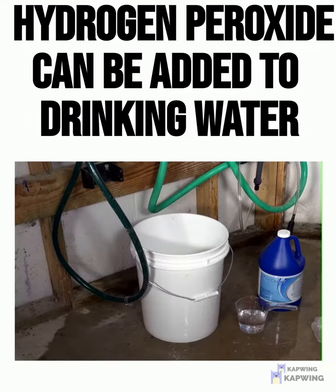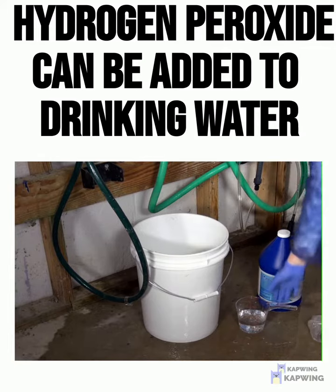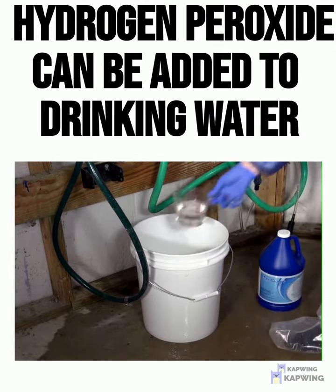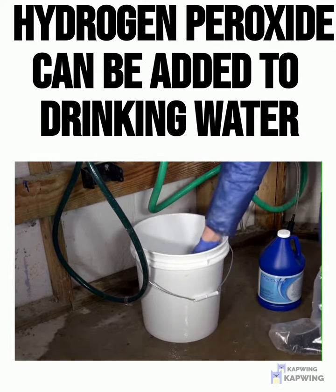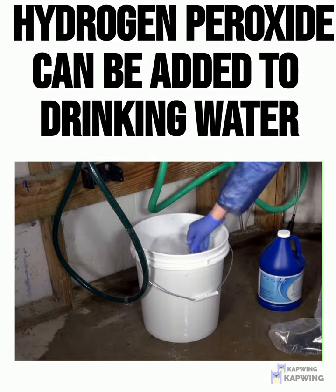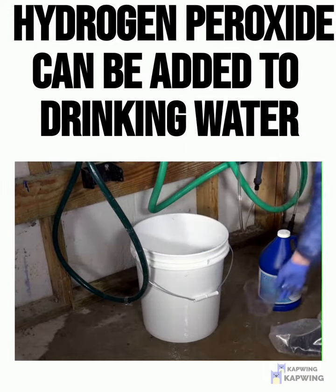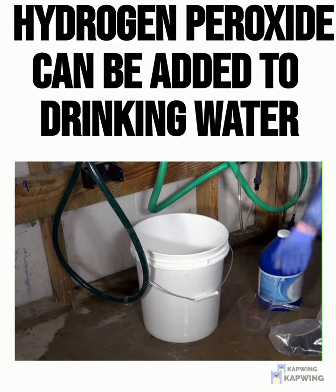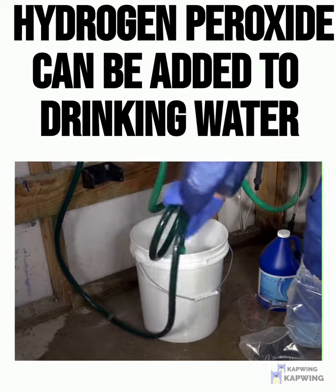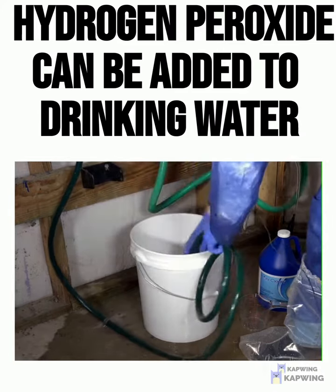For on-flock usage, you can take 8 ounces of ProxyClean, add it to your medicator bucket, and add 5 gallons of fresh water.